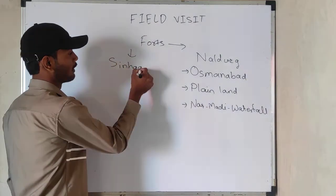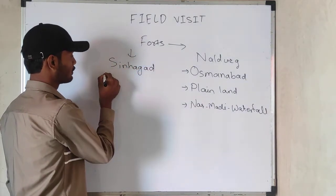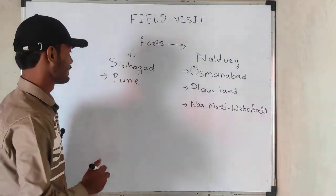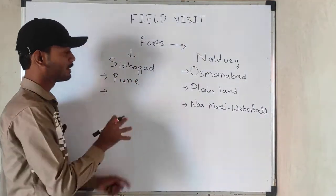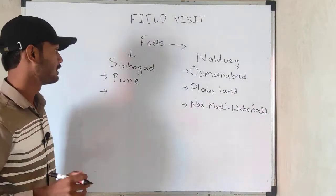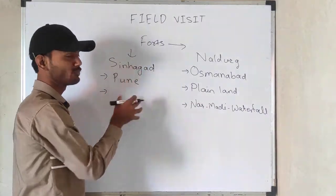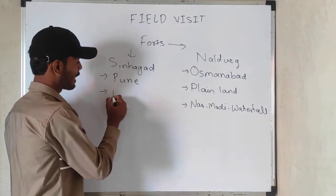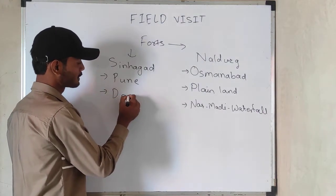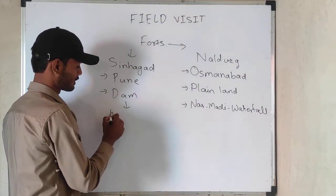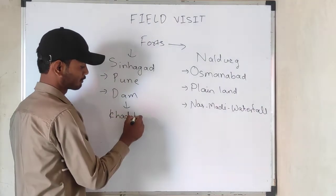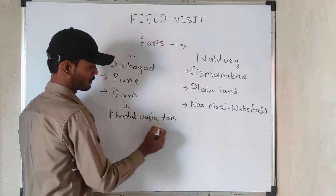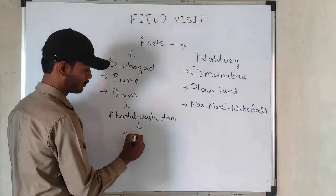Then comes the second fort, which is Sinagal Fort. It is located in Pune — that is a very important point. The second point is that if you climb this particular fort, you will find one dam, that is Khadagvasla Dam, which is on the river Motha.